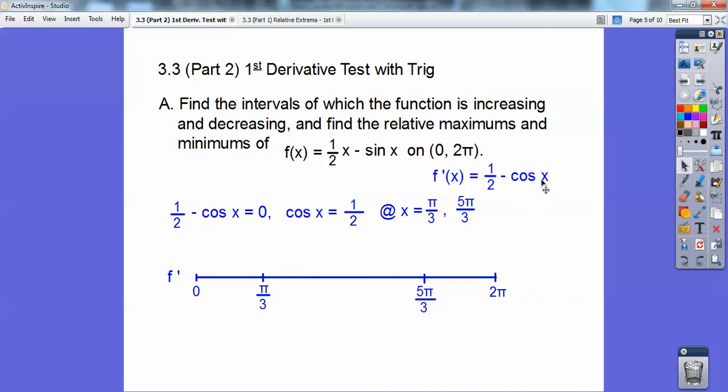Okay, so at pi over four, one-half minus root two over two is going to be negative. Okay, so I'm going to test those intervals, and I'm going to get a negative, positive, negative when I do that, okay?